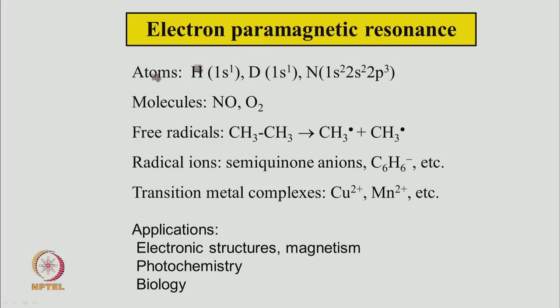This spectroscopy can be used to study host of systems: atoms, molecules, free radicals, radical ions, transcendental complexes. All those species which have magnetic moment associated with electron can be studied by this technique. They have wide applications in understanding electron structure, magnetism, phenomenon in photochemistry and biology. They have wide range of applications.